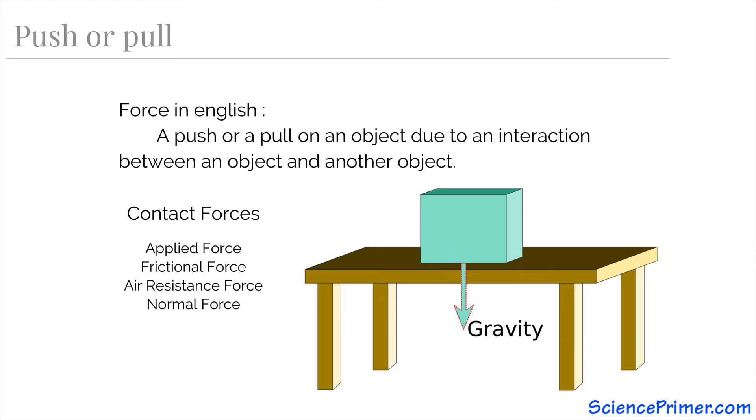In other words, the block is exerting a force, in this case a push, on the table. Again, according to the third law of motion, there needs to be an equal and opposite force from the table pushing up on the block. This is the normal force.